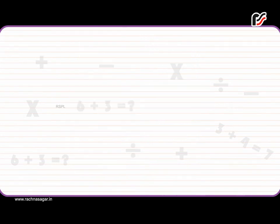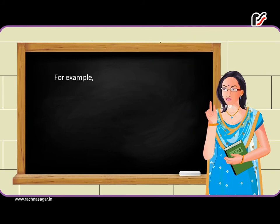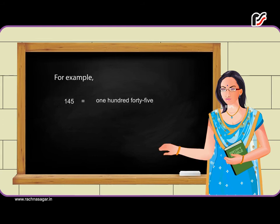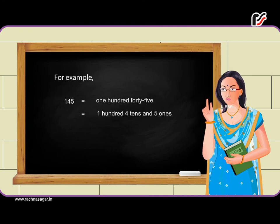Number names. The numerals written in words are called number names. For example, 145 is read as one hundred forty-five. It represents 1 hundred, 4 tens, and 5 ones.